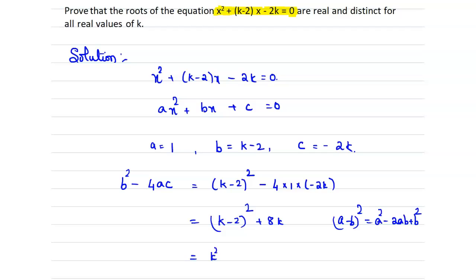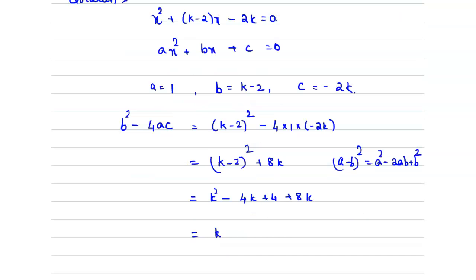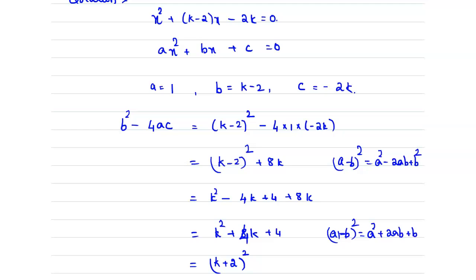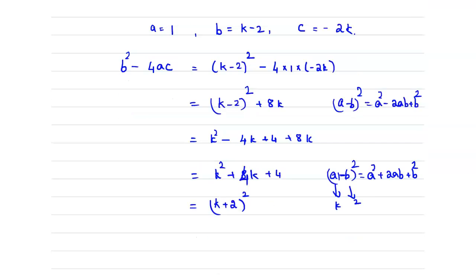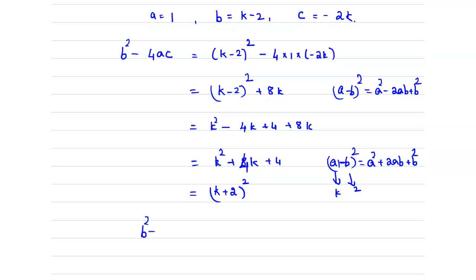We get k² - 4k + 4 + 8k, which equals k² + 4k + 4. This can be written in simple form as (k + 2)², using the identity (a + b)² = a² + 2ab + b², with a = k and b = 2. So the discriminant b² - 4ac = (k + 2)².